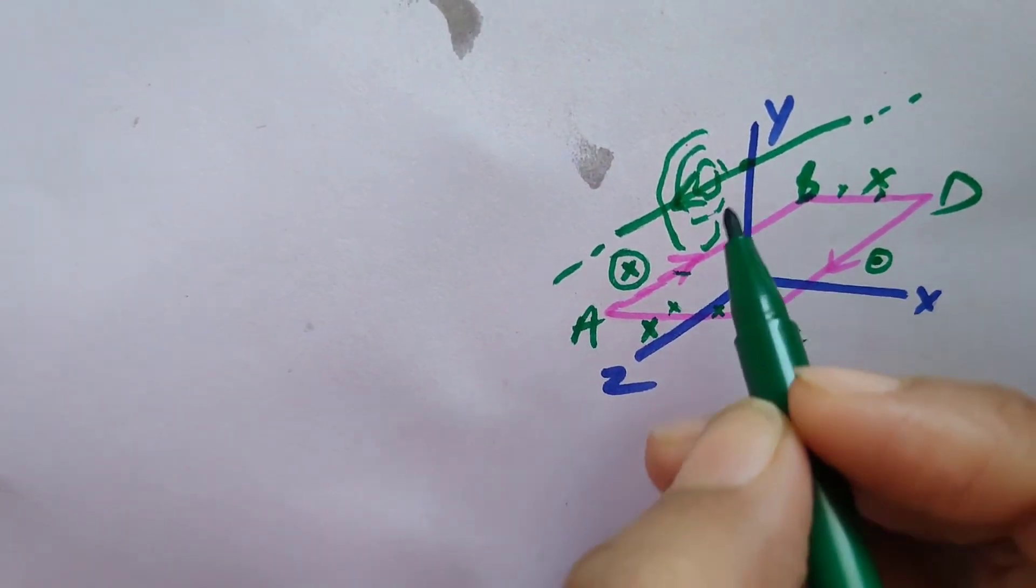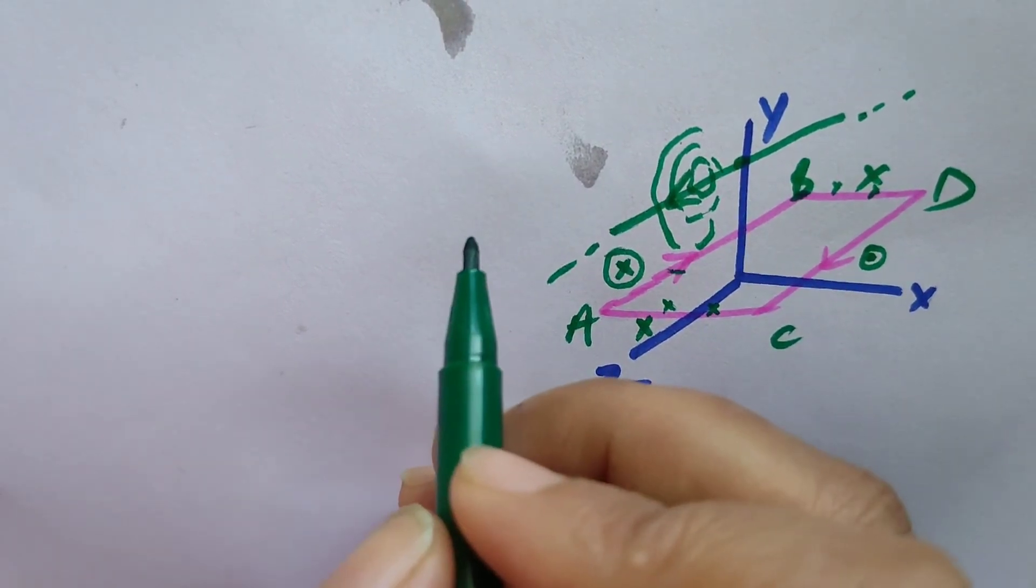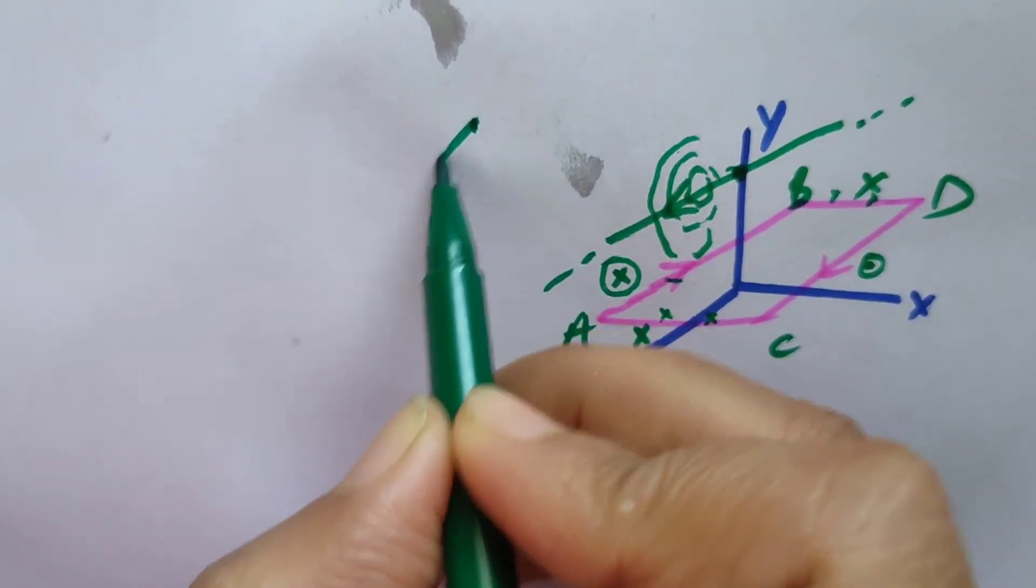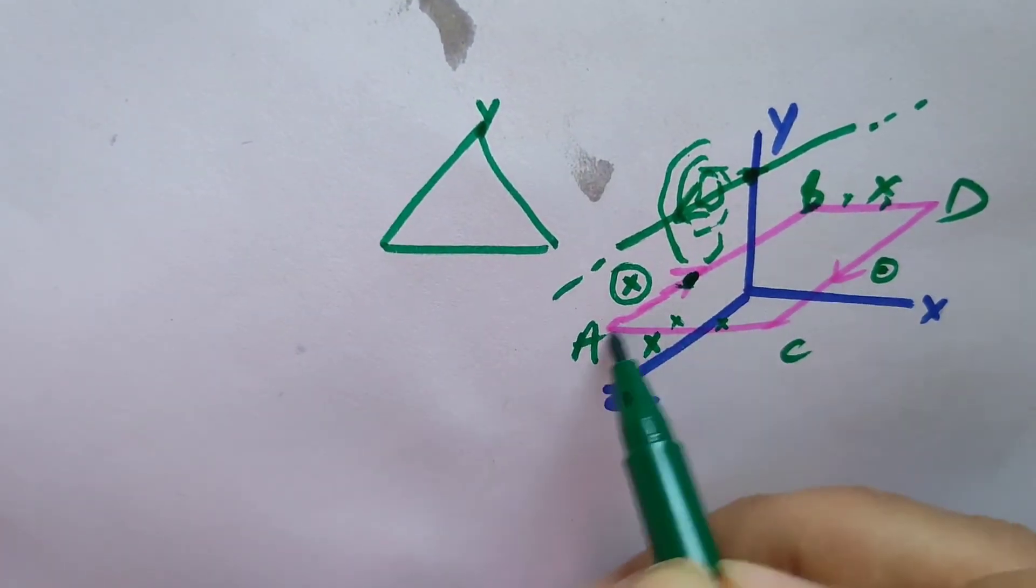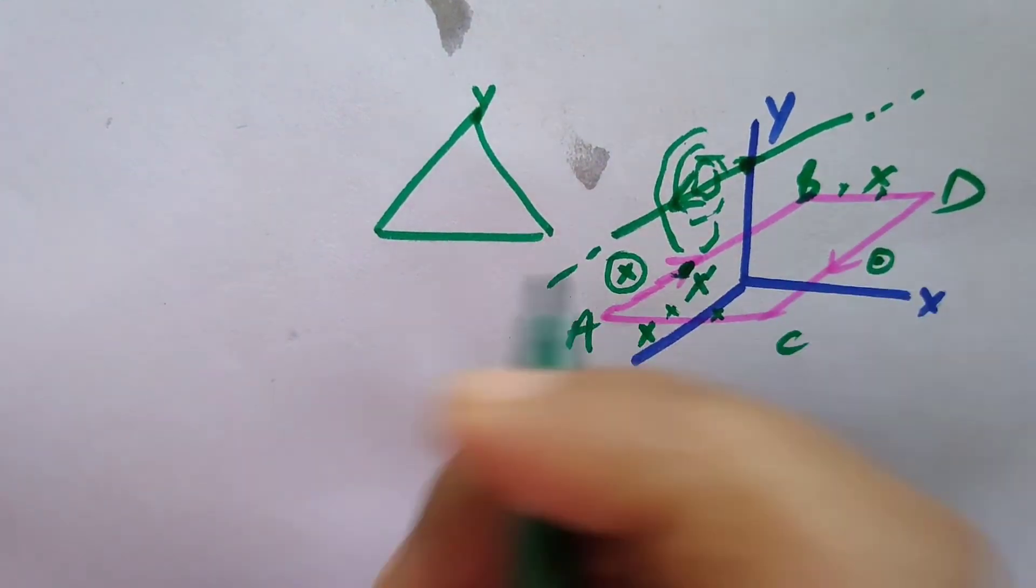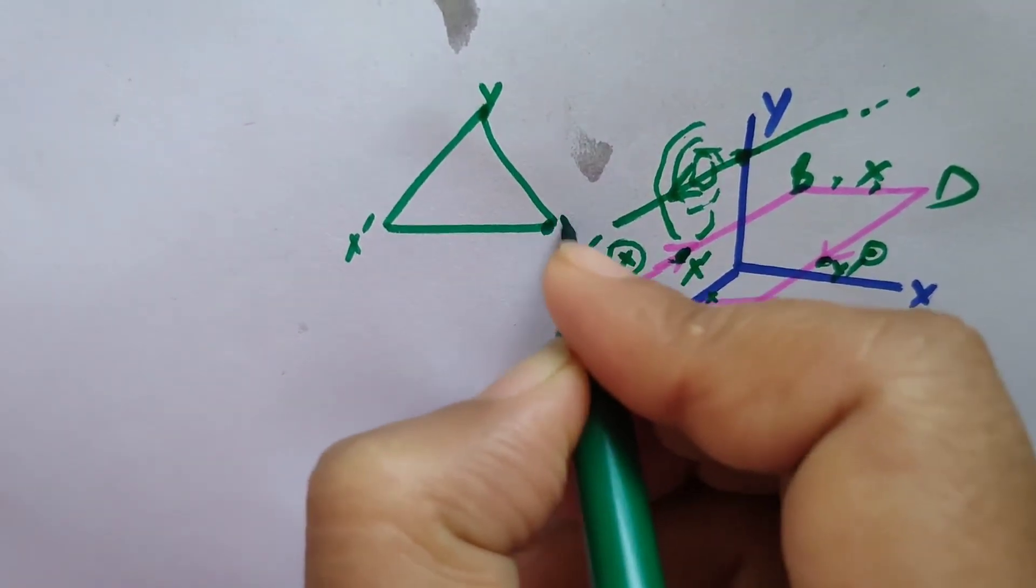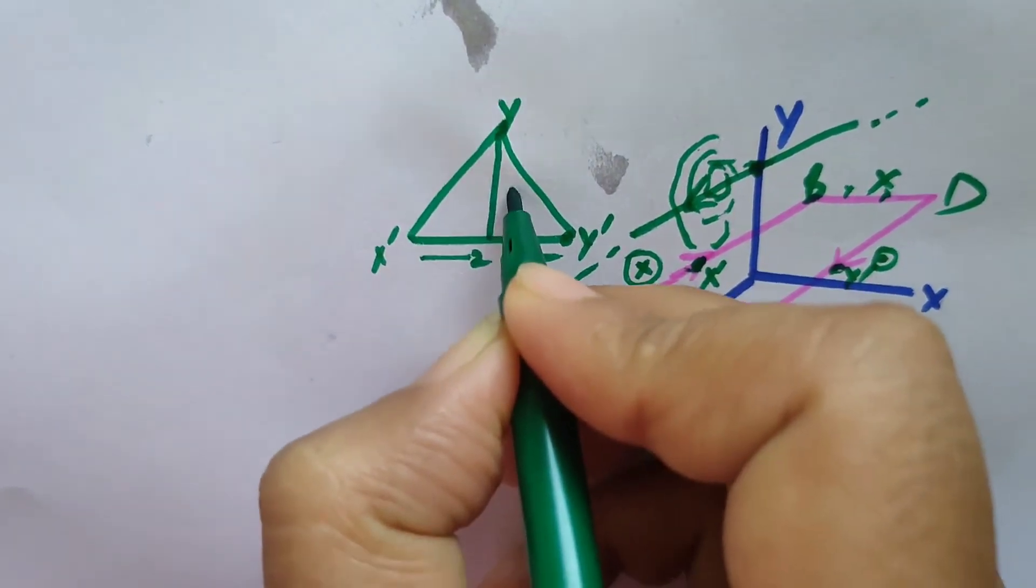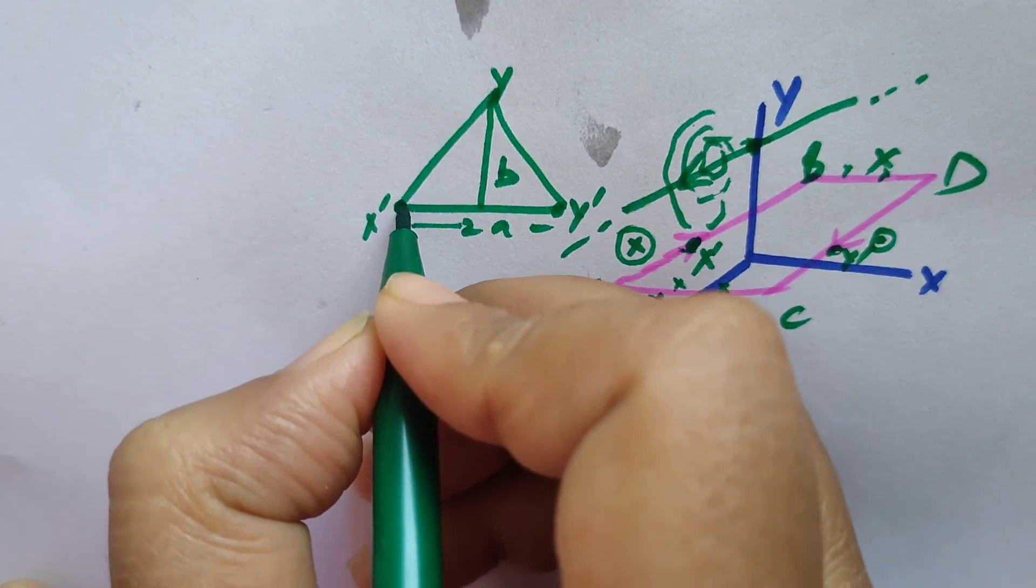It means we have to find out the net force on AB and CD. If we see carefully, the interpretation for this diagram can be like this also. This is the point y, and here we can consider any one point, say x' on AB, and this is the point y' on CD. Both are separated by distance 2a and this distance is b.